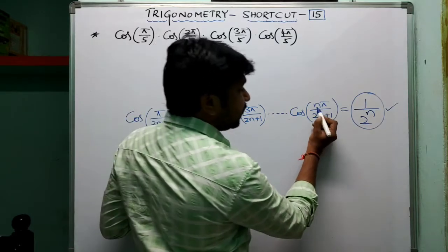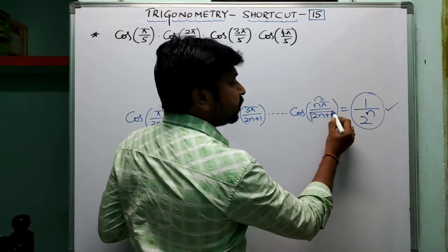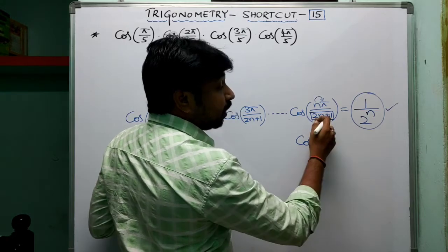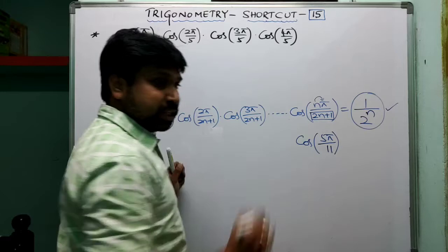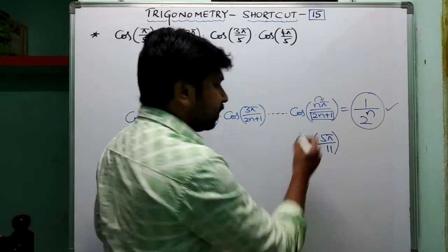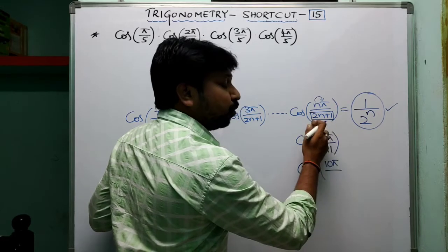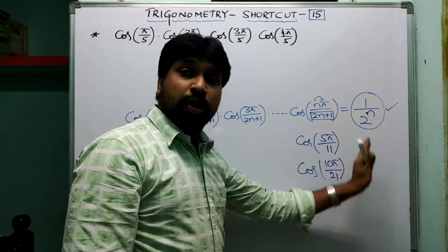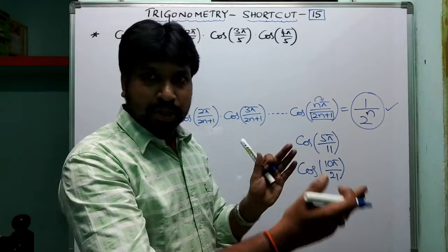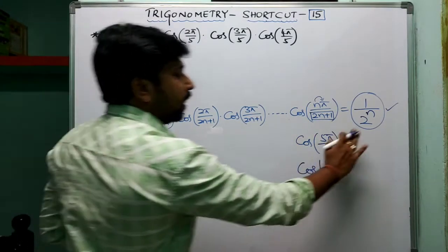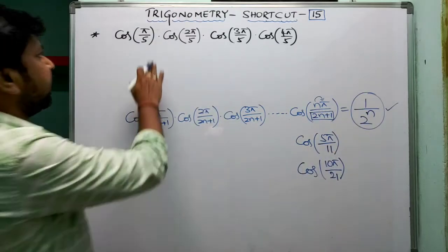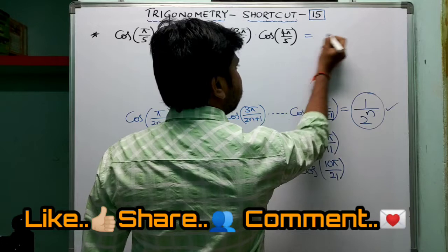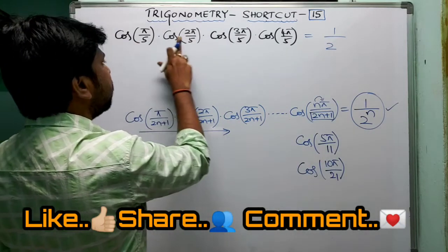You have to clearly understand: the maximum term possible is nπ/(2n+1). For example, if n = 5, then 2n+1 = 11, and the terms go up to 5π/11. If n = 10, then 2n+1 = 21, and terms go up to 10π/21. Applying this to cos(π/5) · cos(2π/5) · cos(3π/5) · cos(4π/5): check continuity — yes, it's continuous. The denominator is 5, so 2n+1 = 5, meaning n = 2. But there are 4 terms... Let's verify: 1/2^4 = 1/16, which matches our answer.